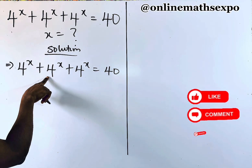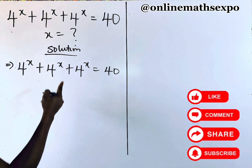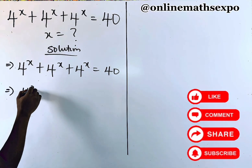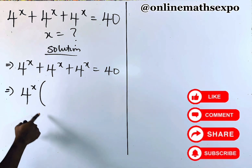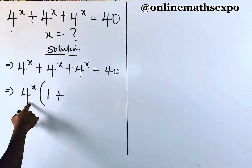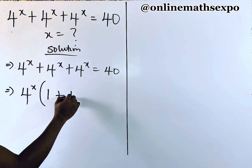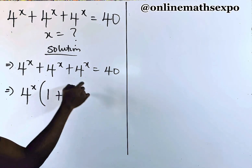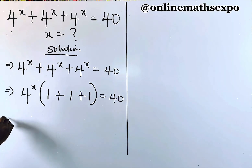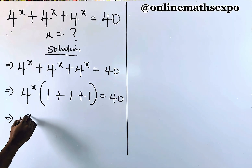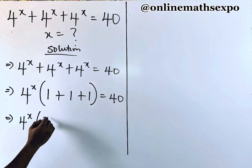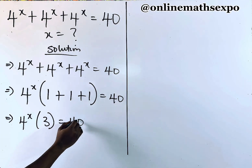You observe that this is repeated, so you can factor it out. To do that, you have 4 to the power of x, open a bracket — when this divides itself it is 1, plus 1, plus 1 — and that is equal to 40. So keep solving: we have 4 to the power of x, and if you add 1 plus 1 plus 1 it gives you 3, so we have 4 to the power of x times 3 is equal to 40.